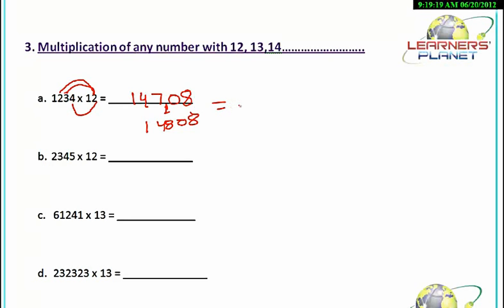So the answer is 1234 into 12 is 14,808. Isn't it so simple friends? Similarly, we can try this example also.